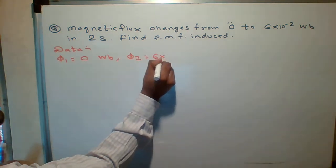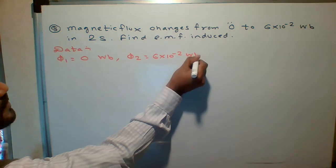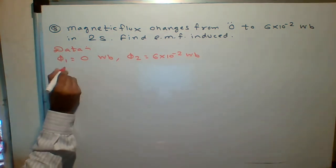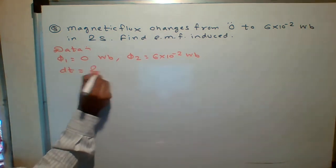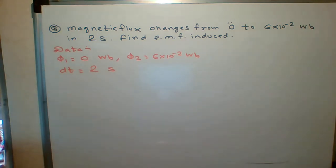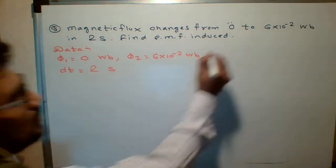Final flux is what? 6 into 10 raise to minus 2 Weber. And time is given. That change in time is how much? 2 seconds. Students, what is the formula for what we need?